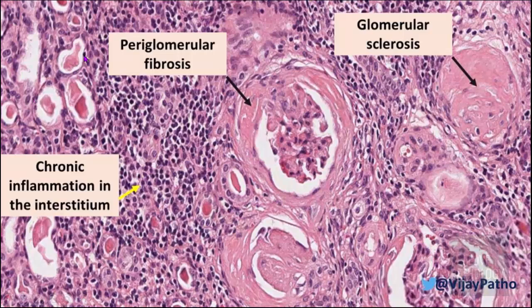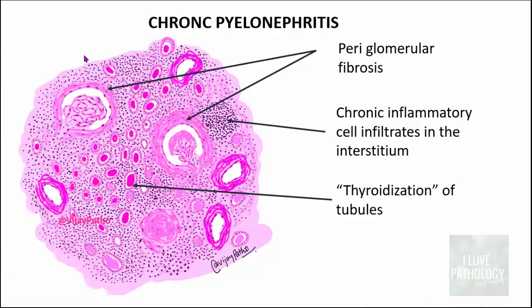In your illustration for chronic pyelonephritis, ensure you represent the thyroidization of tubules — dilated tubules filled with eosinophilic material — chronic inflammatory cells in the interstitium, and the glomerular findings in the form of periglomerular fibrosis and glomerular sclerosis. That covers chronic pyelonephritis.